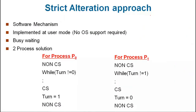We are talking about strict alternation — like a coin. First P1 executes the critical section, then P2 gets it, P2 executes the critical section, then P2 gives it back to P1. The alternation goes: first P1, then P2, then P1.